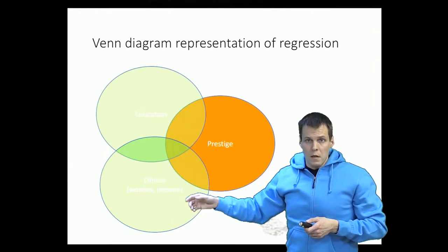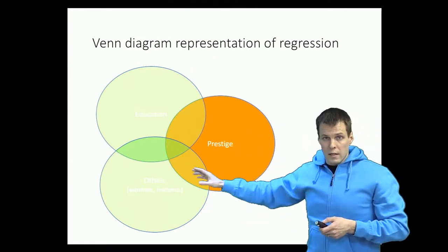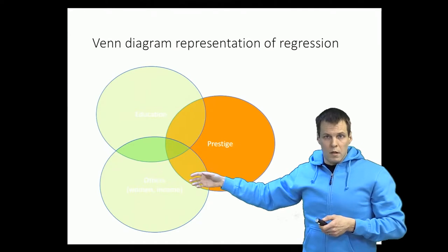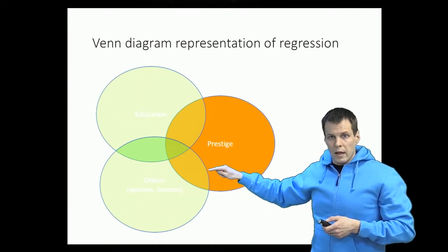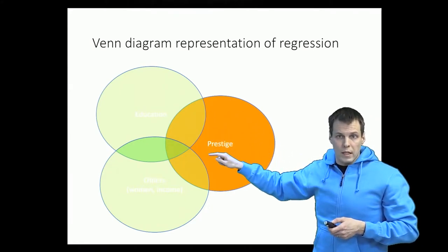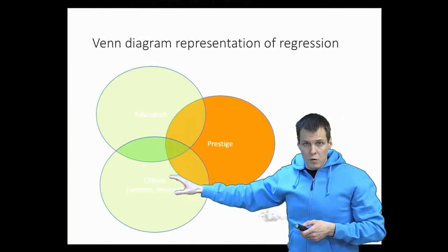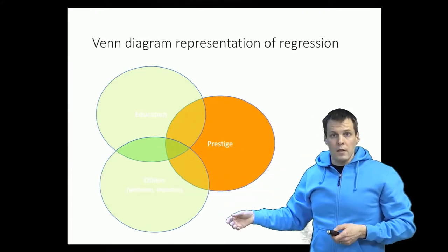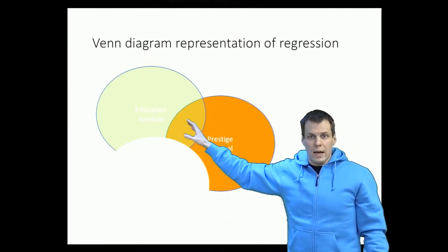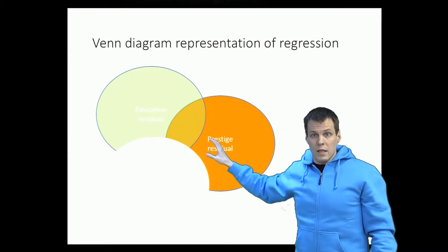What we do is regress prestige on the other variables, regress education on the other variables, and then take the residuals. In a multivariate regression model, the residual is the part that the other variables do not explain. So when we regress education on the other variables and prestige on the other variables and take the residuals, what remains is the unique overlap. The added variable plot then graphically shows us this bivariate relationship between those residuals.